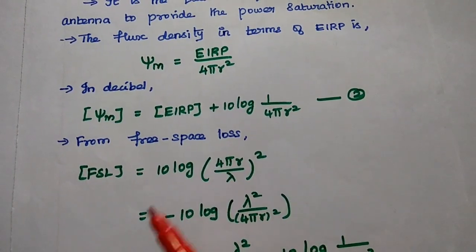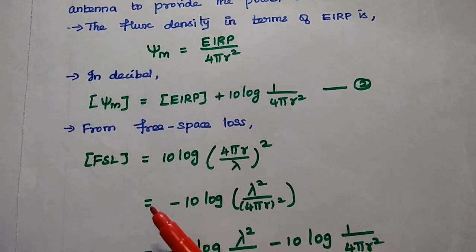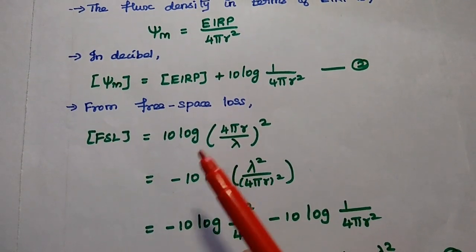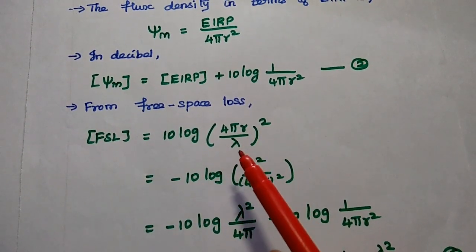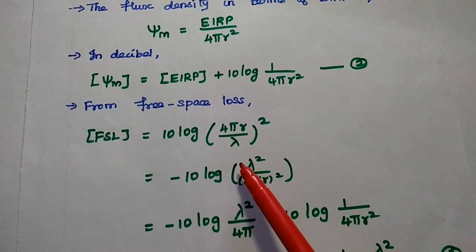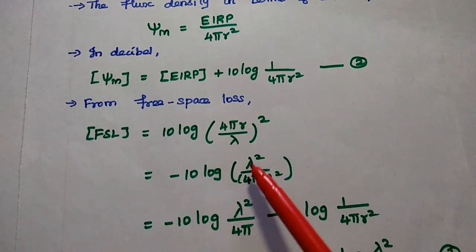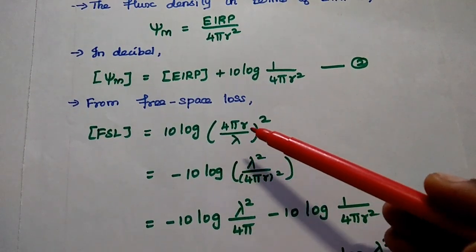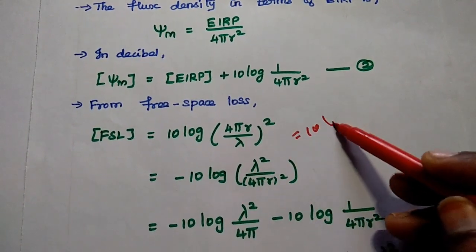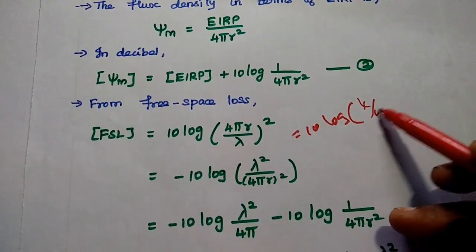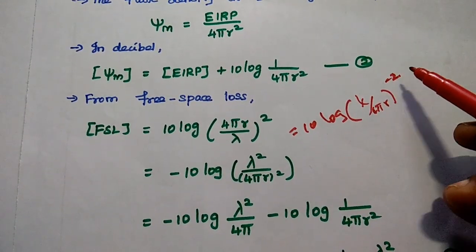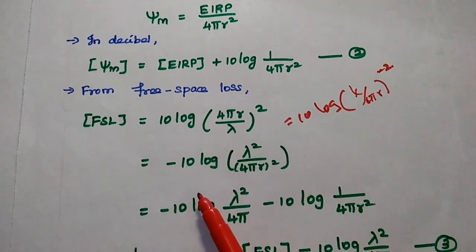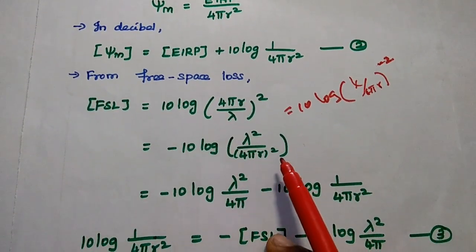From free space loss, FSL can be considered as 10·log(4πR/λ)², where λ is the wavelength. Taking the reciprocal, we get 10·log(λ/4πR)^(−2), which gives minus 10·log(λ²/4πR)². This term can be split as: −10·log(λ²/4π) minus 10·log(1/4πR²).